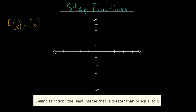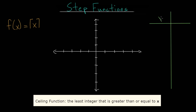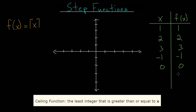To really get an understanding of the function, we want to make a table by plugging in different X values and determining their Y values. For any integer it's not going to be too exciting, but let's look at one, two, and three. Plugging in one, the Y value is the least integer that is greater than or equal to one, which is just one, since one equals one. So for integers we're using the equal part of the inequality. Plugging in two gives two, and three gives three.